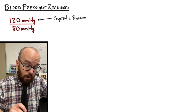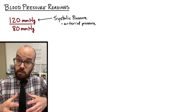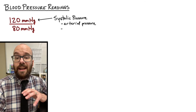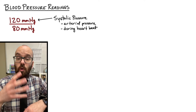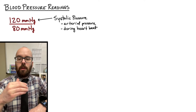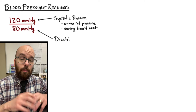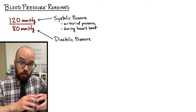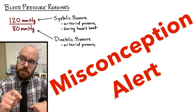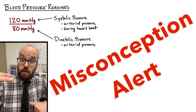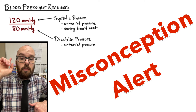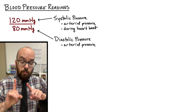The top reading is the systolic pressure. Systolic pressure is an arterial pressure — not the pressure in the veins, but the pressure in the artery running through our arm, specifically during a heartbeat when the heart is contracted. So if blood pressure is 120 over 80, when the heart beats the pressure shoots up to 120. The bottom number is the diastolic pressure, which is always lower than the systolic. Importantly, a common misconception is that diastolic pressure is the pressure in the veins — it is not. Both systolic and diastolic are arterial pressures.